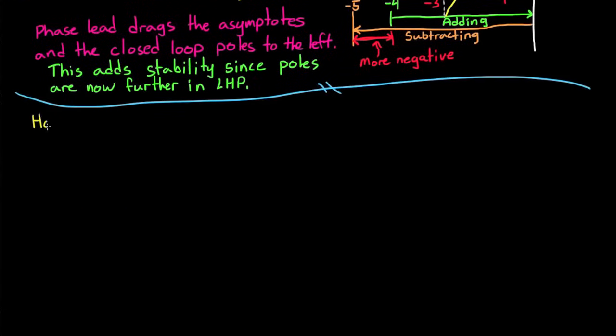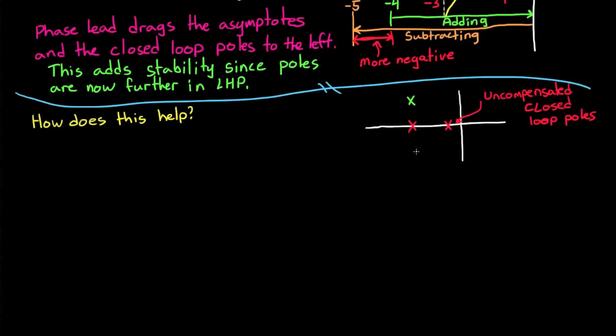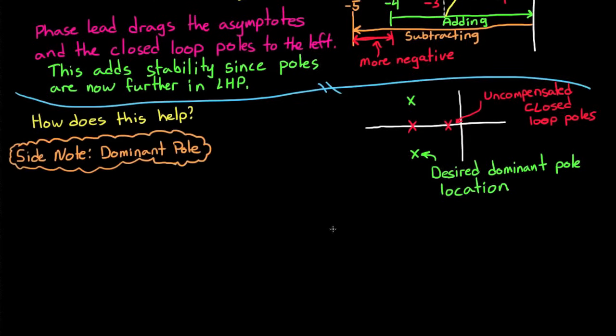Alright, so now that we've done that, you might be thinking to yourself, well, how does that help our situation? Well, typically when you use the root-locus method, you usually have a position in mind where you want your dominant closed-loop poles to reside. So basically you want to move them from some uncompensated closed-loop position to some desired location that's going to allow your system to meet its requirements.